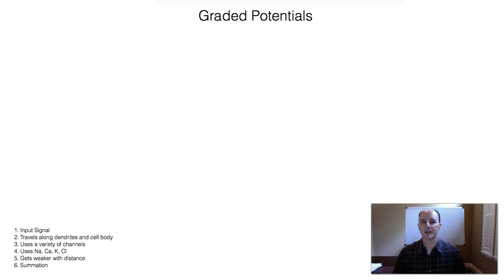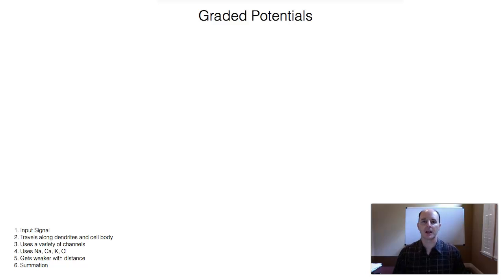Hello class, Mr. Linder here. In this video, I want to talk about graded potentials. When we talk about the nervous system, usually the first kind of potential that comes up is action potentials, which are the electrical signals that travel along the axon of a neuron. But what's not oftentimes talked about is the signal that leads to the action potential, which is called the graded potential.